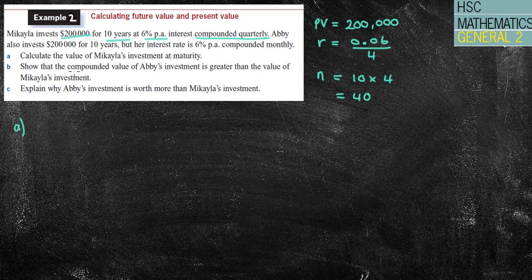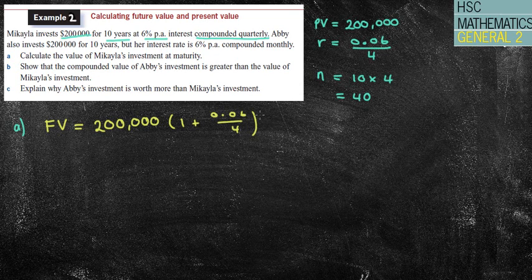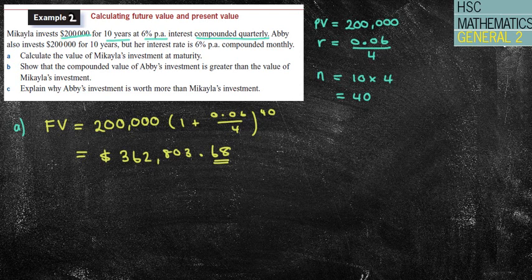Calculate the value of Michaela's investment at maturity. So I'm asking for the future value, and we're putting in the present value of $200,000. We've got our 1 plus, we've got our rate there, 0.06 divided by 4, because it's quarterly, and to the power of 40, because it's 4 times a year for 10 years. So now, it's a matter of putting that amount into our calculator. Please really be careful when you're typing things into your calculator, making sure you get all the zeros. That's a really common mistake that I do see that really should be avoided, as it is a silly error. If I do that, I'm going to get an answer of $362,803.68. Once again, remember, always the two decimal places for money.